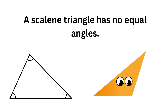A scalene triangle has no equal angles. What that means is that each angle is a different size. You will never get a scalene triangle that has angles of equal size — they will always be different.